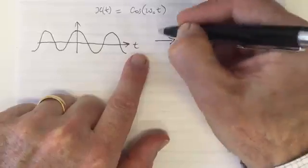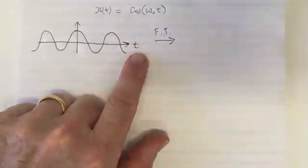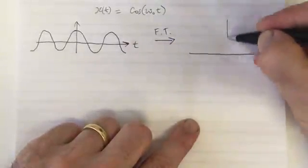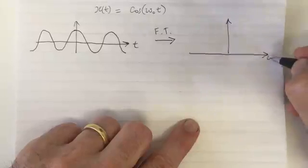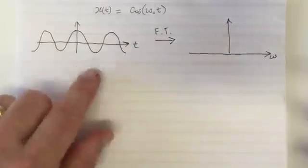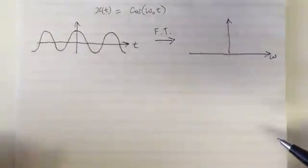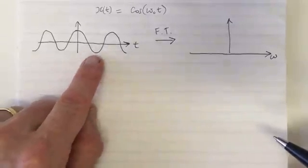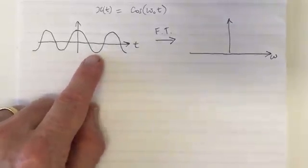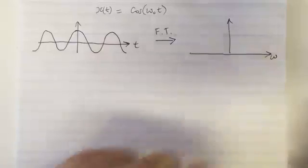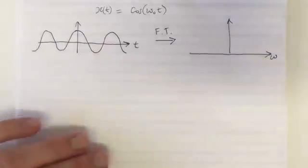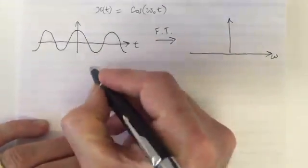We want to find the Fourier transform, which is in the frequency domain. The Fourier transform tells us the frequency components that make up a signal. In this case, the signal is a cosine waveform, and the cosine waveform has only one frequency component. So we're expecting to see something that only has one frequency component. Let's understand why that is.